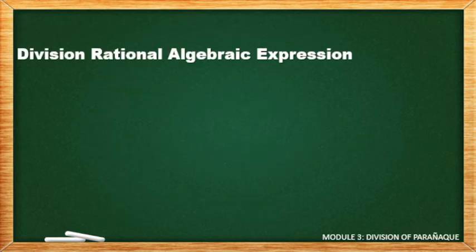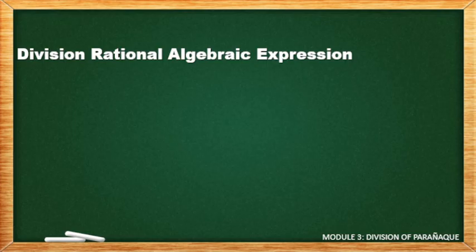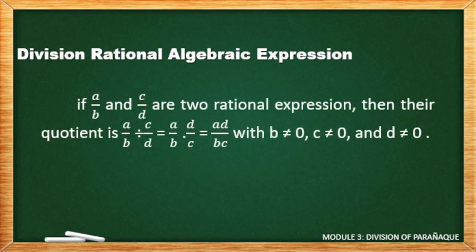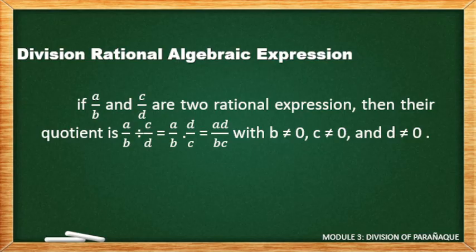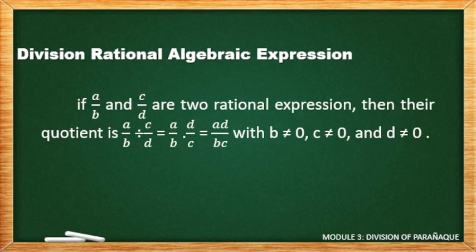Next, the division of rational algebraic expressions. Here naman, almost the same lang sila sa multiplication. Yun nga lang, meron tayong 3 steps na kailangan muna nating sundin bago tayo mag-solve. It's the definition: if A/B and C/D are two rational algebraic expressions, their quotient A/B ÷ C/D is equal to A/B times D/C — the reciprocal of C/D. With conditions: B, C, and D should not be equal to 0.